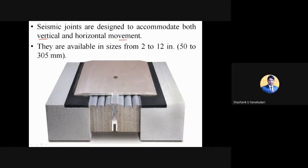Vertical movement refers to whatever load is applied on members which directly transfers to the earth. Horizontal movements include primary waves as well as secondary waves. Because of wind velocity also, members can move a certain distance. Due to these reasons, concrete may get moved from one place to another.